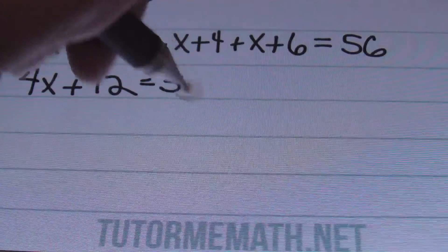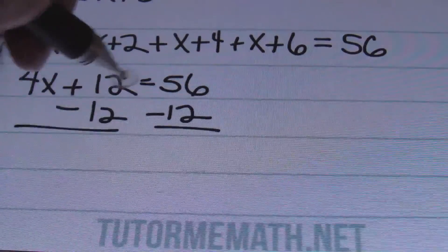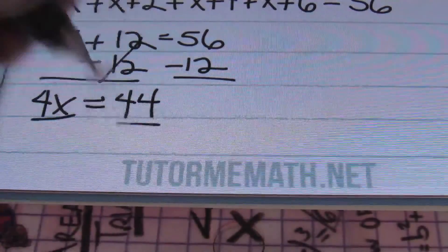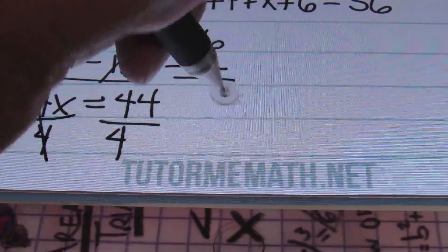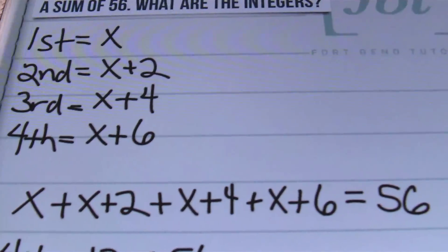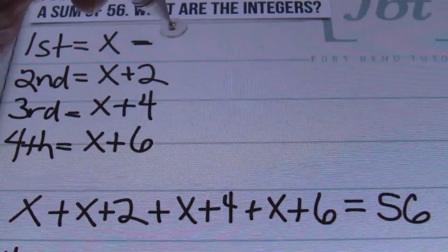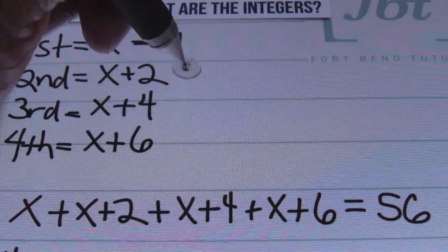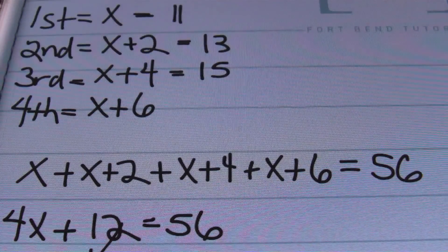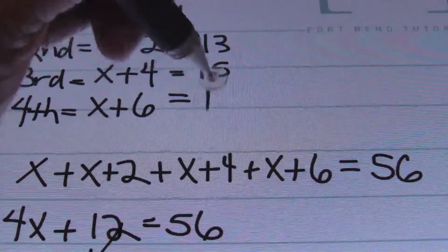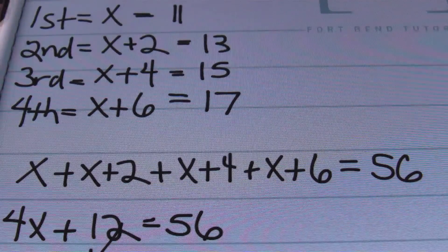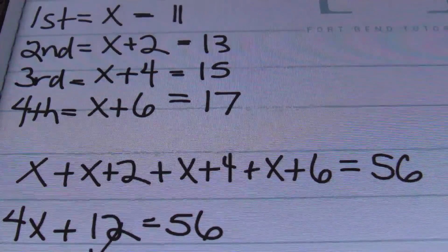This still equals 56. I'll subtract 12 from both sides, bringing down 4X, which equals 44. Then I divide both sides by 4, and my 4's cancel out to find that my first odd integer is 11 — since 44 divided by 4 is 11. Going back to the definitions: the first value is 11, the second is 11 plus 2 equals 13, adding 2 to 13 gives 15, and adding 6 to the original gives 17. So our four consecutive odd integers are 11, 13, 15, and 17, which add up to 56. Done.